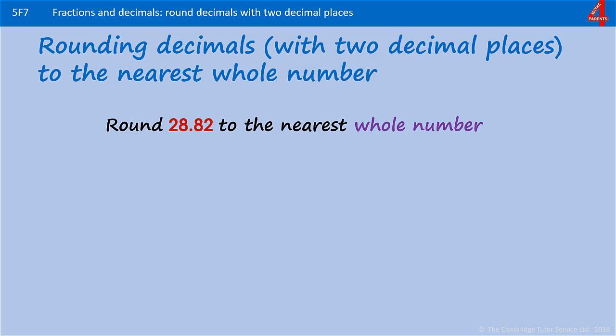Here are some for you to try. Pause the video, round 28.82 to the nearest whole number. The whole number is 28. The deciding digit is in the tenths column and that's 8. We don't need to worry about what's in the hundredths. 0.5 or bigger, we round up. So 0.8, we'll round that whole number up to 29.